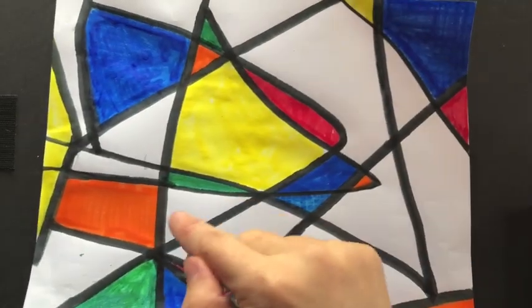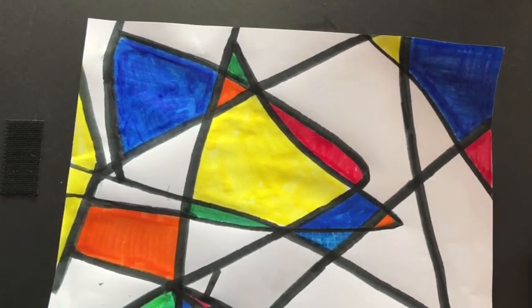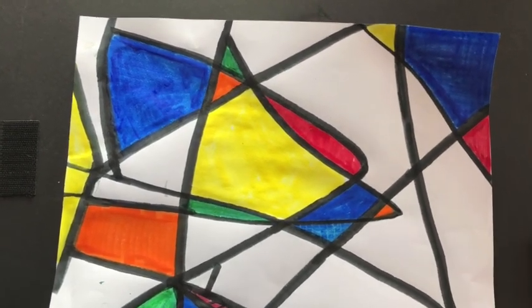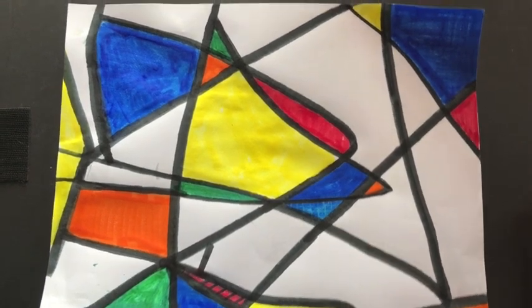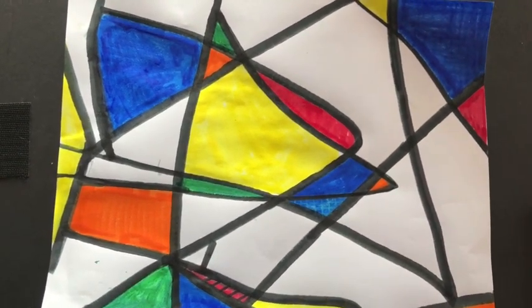Now you might need to go over some of your black lines like I had to do because my pen wasn't very good to make them darker or thicker. Whatever you like. You can add a few more lines if you want as well. Just whatever you like.